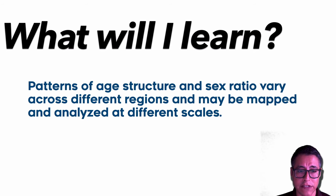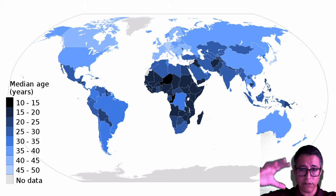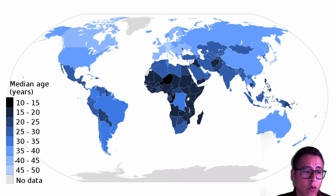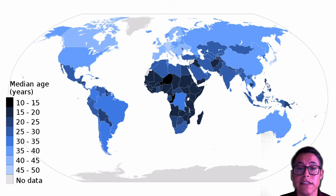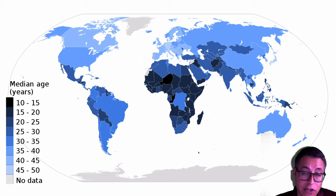Geographers use data of age, for instance, to map out where in the world people are younger and where they are older. On this map, the median age in years is represented by a dark or light shade of blue. The darkest is the youngest — 10 to 15 years old — and the lightest is 45 to 50 years old. At the global scale, this shows us that areas like Africa have a very young population.